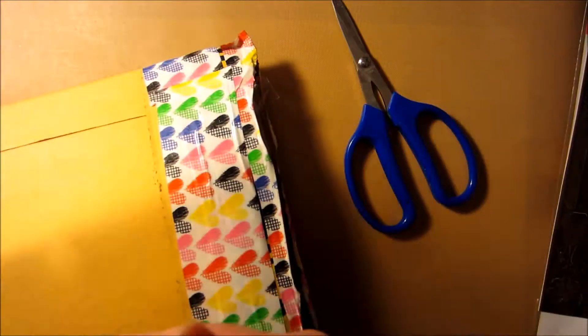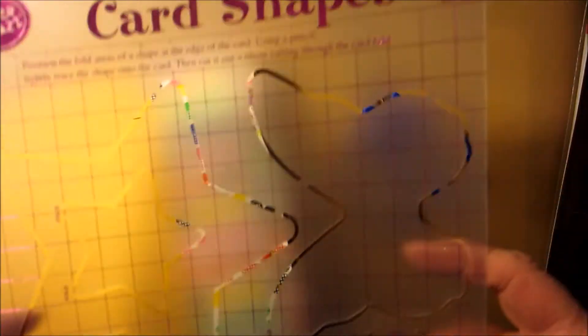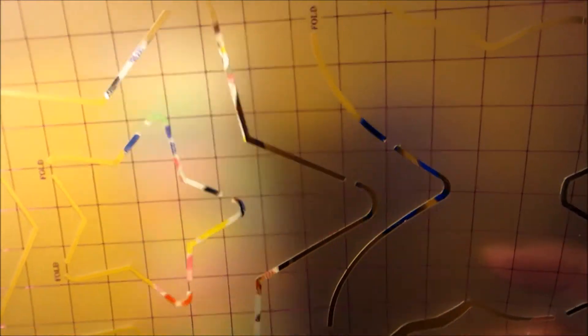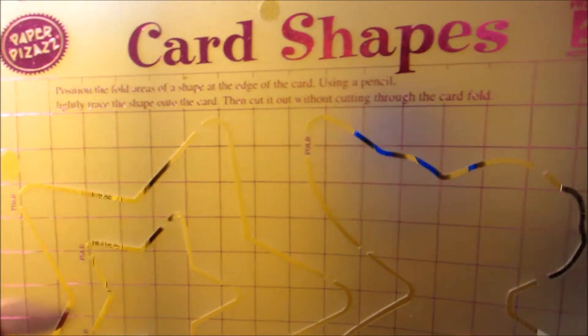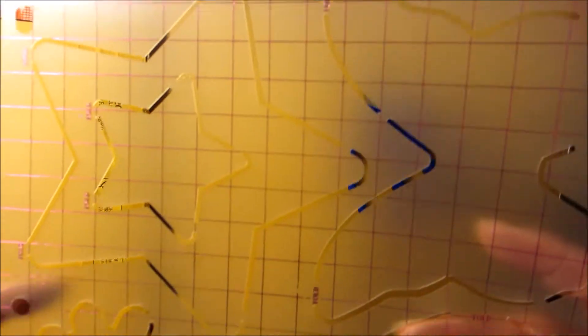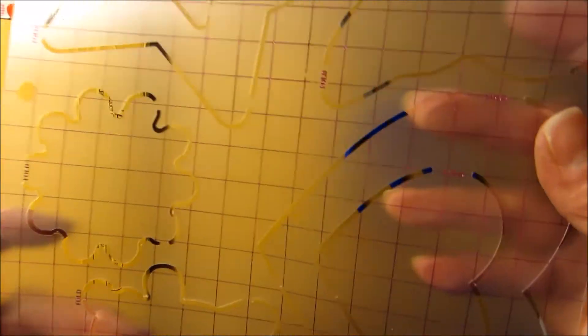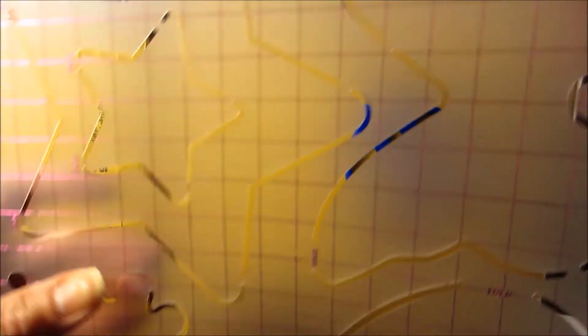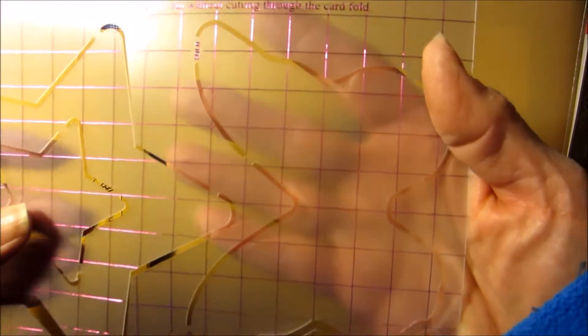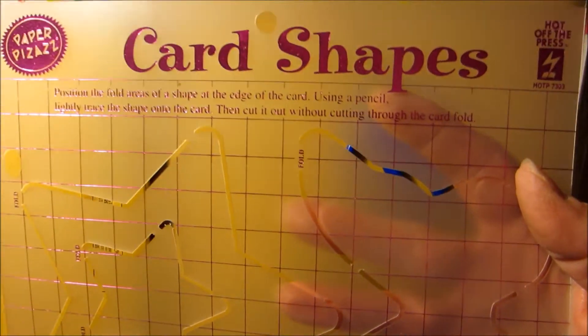Oh, look at that. It's a card shape. Use a pencil, lightly trace the shape onto the card, then cut it out without cutting through the card fold. Very cool. So there's a teddy bear, double heart, a flower, a double star, and a butterfly. Very cool.